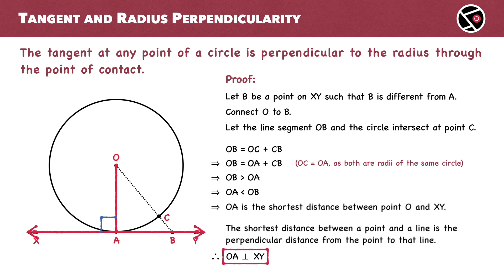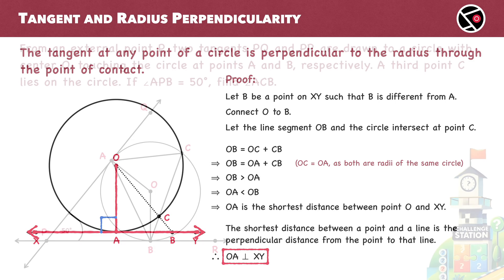That's why OA must be perpendicular to XY. And with that, we have proven that the tangent at any point of a circle is perpendicular to the radius through the point of contact. But hold on. Now it's time to put your knowledge to the test at the challenge station.